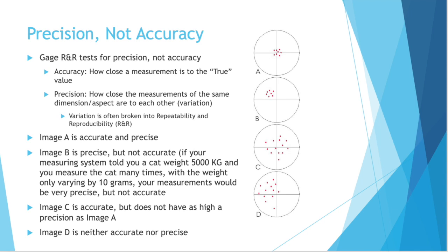Variation is often broken into repeatability and reproducibility. That's the R&R in gauge R&R. So to really understand the difference of accuracy and precision, let's look at the four images on the right side of this slide. Image A is accurate and precise. See how all those dots are in the center of the crosshair? They're all near each other, which is precise, similar locations, and they're all accurate. We were aiming for the crosshair.